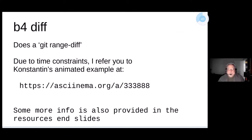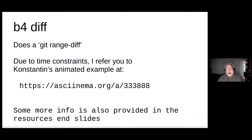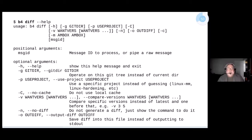There's another useful command: git range-diff. Given the time available I chose not to talk about it in detail. Instead I suggest going to an animated example at the URL provided, where Konstantin walks through the actual commands in real time showing how b4 diff and git range-diff work. I also provide more information in the resource slides at the end of the talk. The b4 diff command has a large number of parameters available.